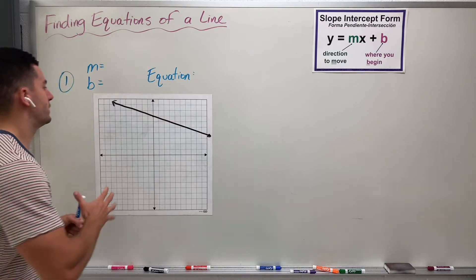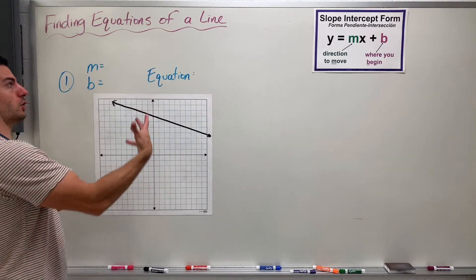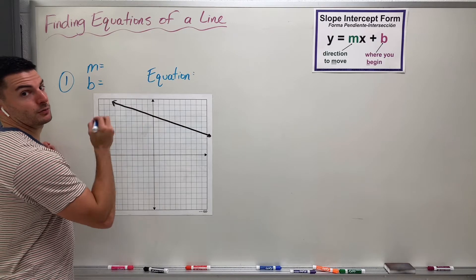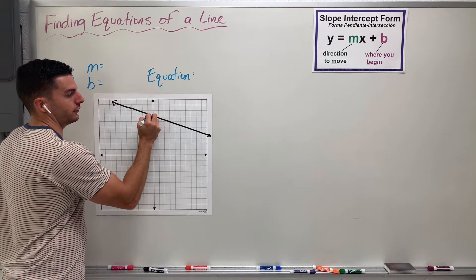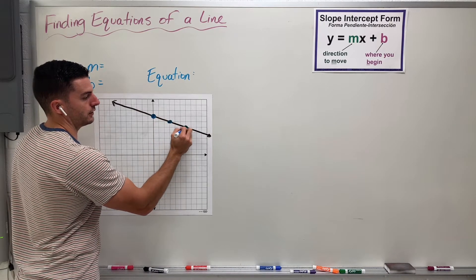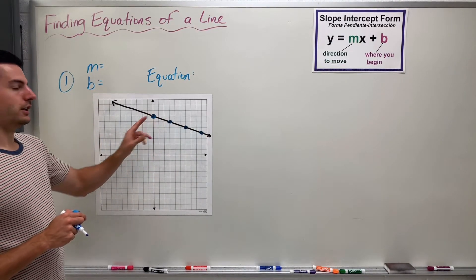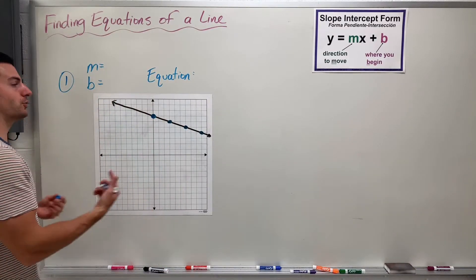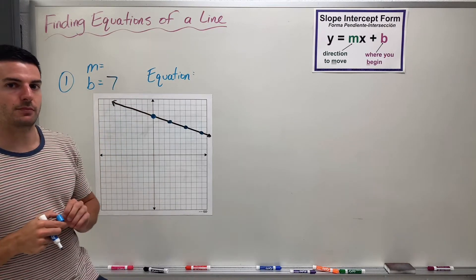Looking at number 1, I'm given this line and my job is to find the equation. To find the equation, I need to find the M and the B values. That means I need to first plot specific points on here — where does it cross through a corner? It helps to start with the one right on the y-axis, because that is going to be a very important point. Then I keep tracing along where it crosses through a corner. This value, this point right on the y-axis, is my B value. I look at where that is, and that is at positive 7 — so that is my B value.